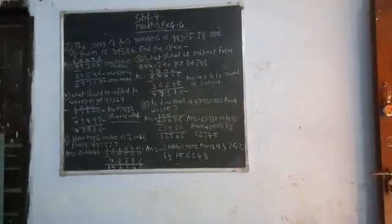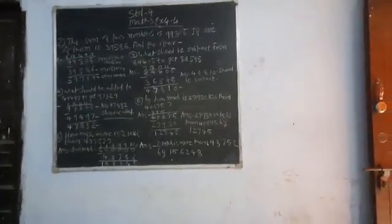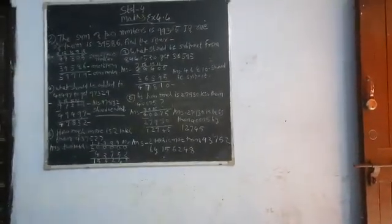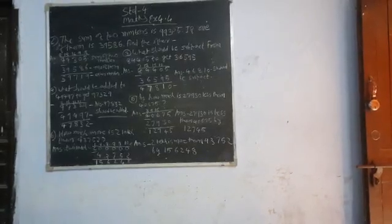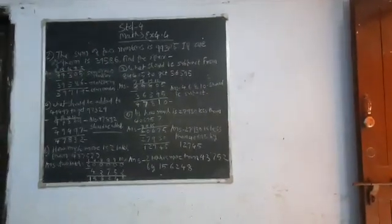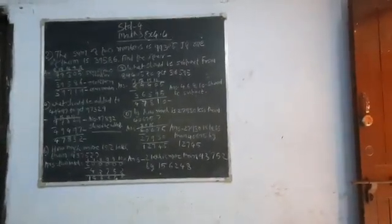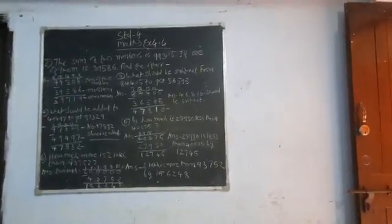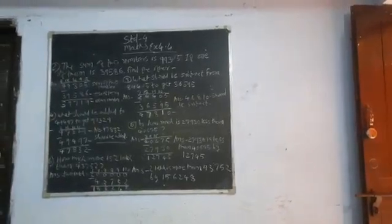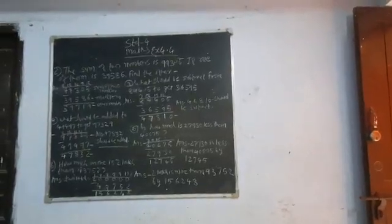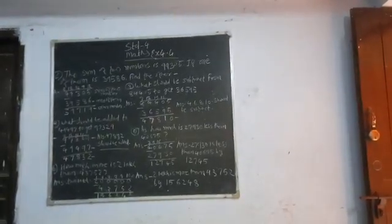Now sum number 4. What should be added to 49,497 to get 97,329? I have shown that 9 minus 7 is 2, and 2 minus 9.